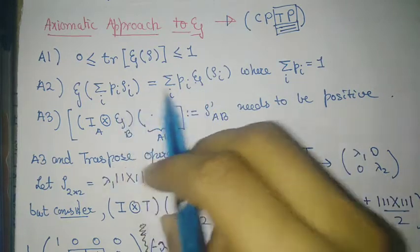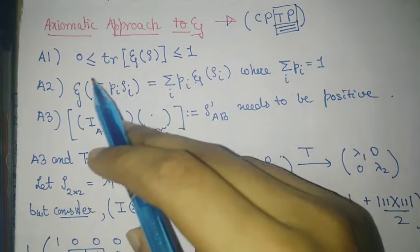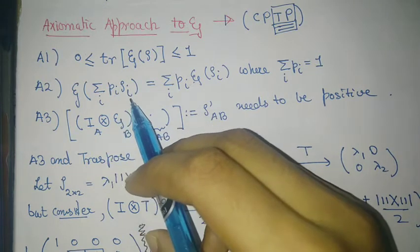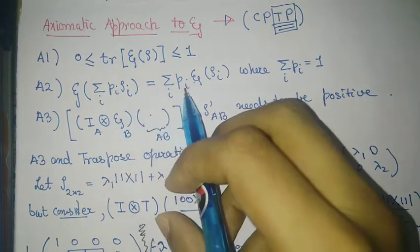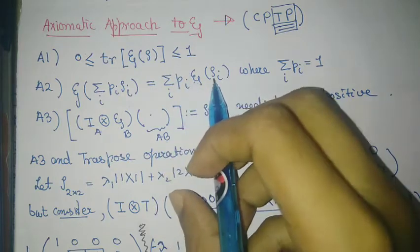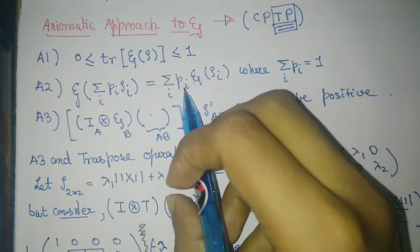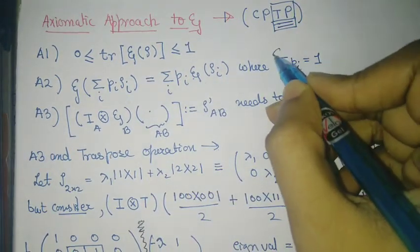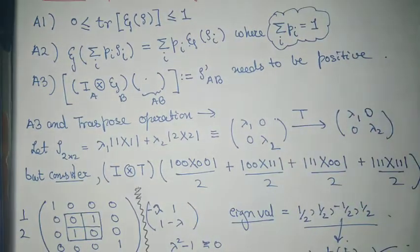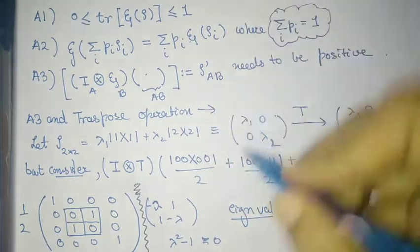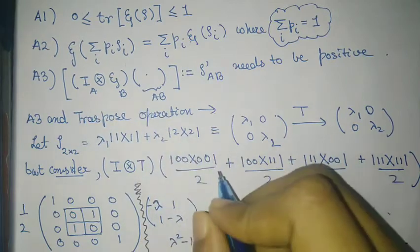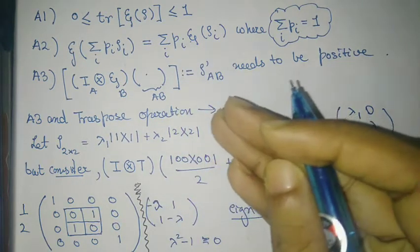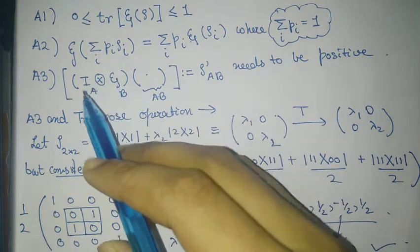The second axiom says that noise must be conserved: if you randomly mix ρ_i with probability p_i, you must have ε(Σ p_i ρ_i) = Σ p_i ε(ρ_i). This is the convexity or probability-distribution completeness criterion, seen many times in different forms. The third axiom is the completely positive part: let ε be a quantum operation on system space; it can be upgraded to act on system plus an ancilla of your choice.